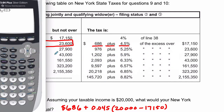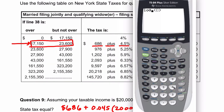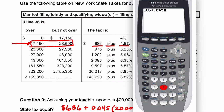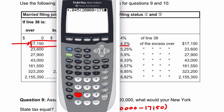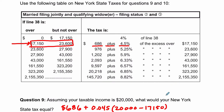So let's pull up a calculator: 686 plus 0.045 times 20,000 minus 17,150 — that's the number from the table — hit enter, and we get $814.25. So $814.25.